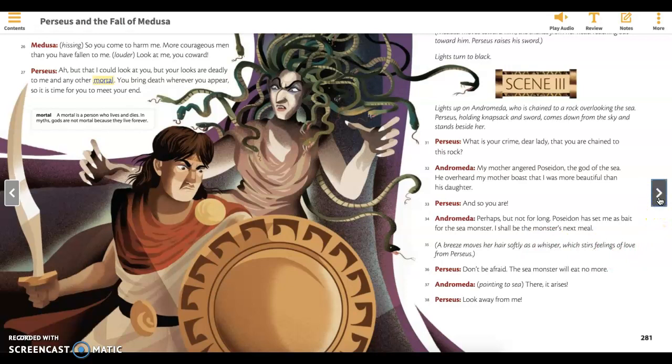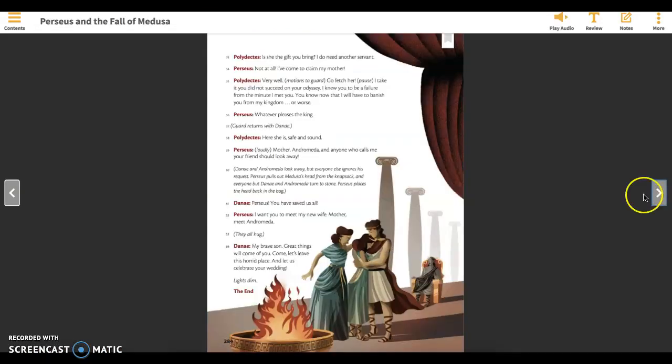And the last thing we are going to look at is on page 284, where Polydectes is speaking. And he says, Very well, go fetch her. I take it you did not succeed on your odyssey. I knew you to be a failure from the minute I met you. You know now that I will have to banish you from my kingdom, or worse. Now that word odyssey is one of our vocabulary words with this text. But it is also, like I was mentioning earlier with the figurative language, it's also an allusion to a really famous, well-known Greek poem that follows the journey of a hero. So if Polydectes is saying you did not succeed on your odyssey, he's saying you didn't succeed on your hero's journey. But, we know that is not the case in this allusion that Polydectes was making. He didn't exactly have the right idea.